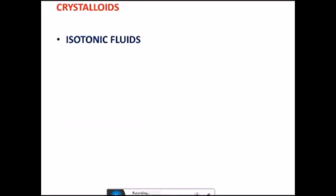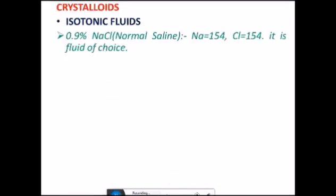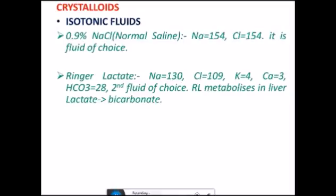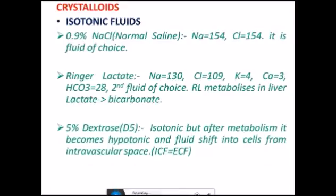Some words about crystalloids. The isotonic type, example is 0.9% NaCl, that is normal saline. In this, sodium is 154 millimoles, chloride is 154. It is fluid of choice. Ringer's lactate is also a fluid of choice. In this the composition is sodium 130, chloride 109, potassium 4, calcium 3, bicarbonate 28, and it has lactate also. Ringer's lactate metabolizes in liver where lactate gets converted into bicarbonate.